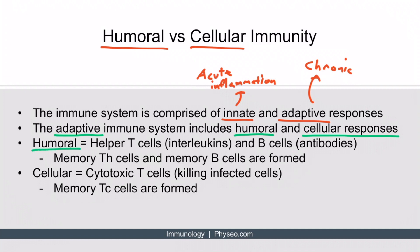The humoral immune system is made of helper T cells as well as the interleukins that they produce. Humoral response also includes B cells and the antibodies they produce. Since B cells and helper T cells are involved, when humoral immunity is activated, they will form memory helper T cells and memory B cells.